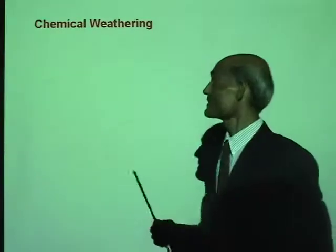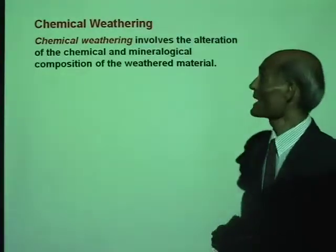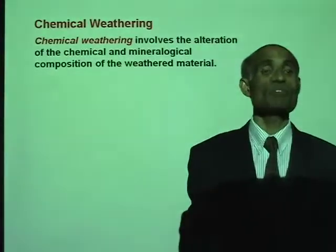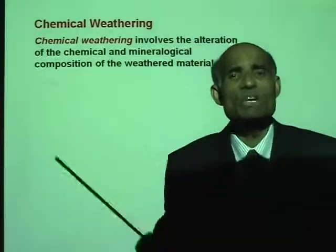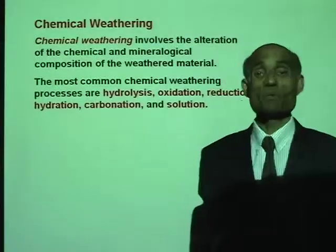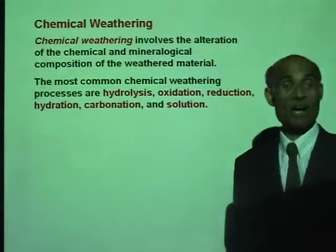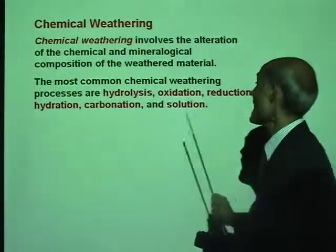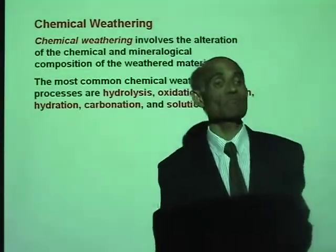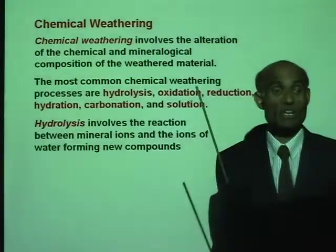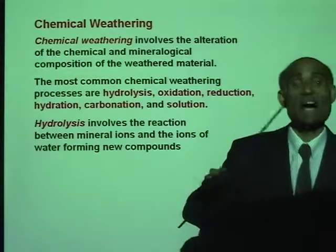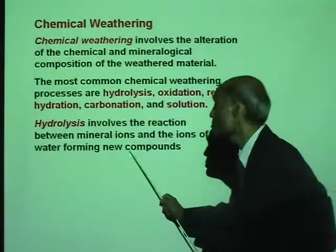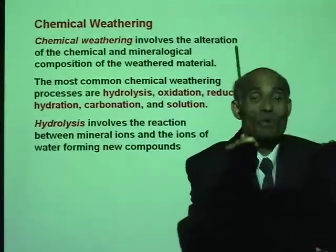Chemical weathering involves the alteration of the chemical and mineralogical composition of the weathered material. The rock material will undergo chemical changes and gradually break down. The most common chemical weathering processes are hydrolysis, oxidation, reduction, hydration, carbonation, and solution. Hydrolysis involves the reaction between mineral ions and ions of water, forming new compounds. As a result of forming new compounds, the rock will begin to break down — just like iron when it rusts.